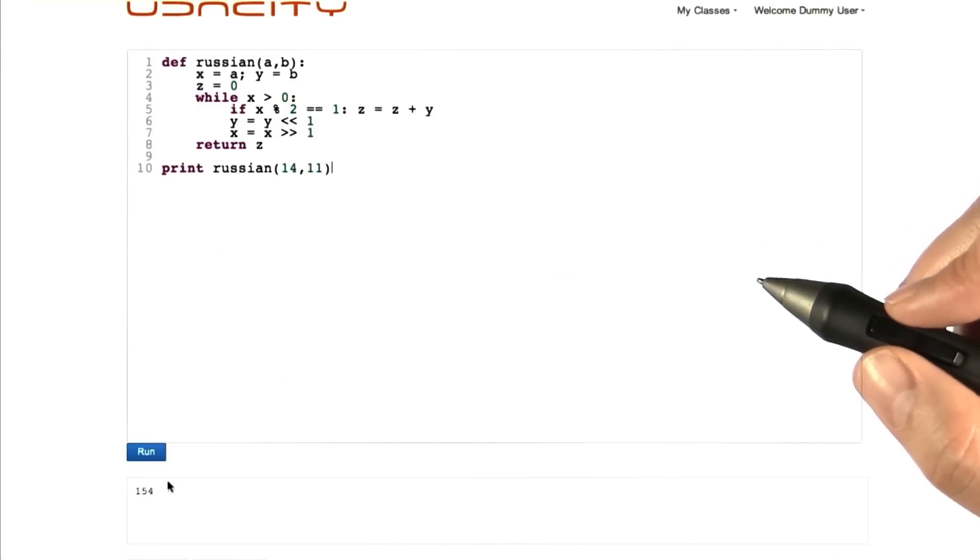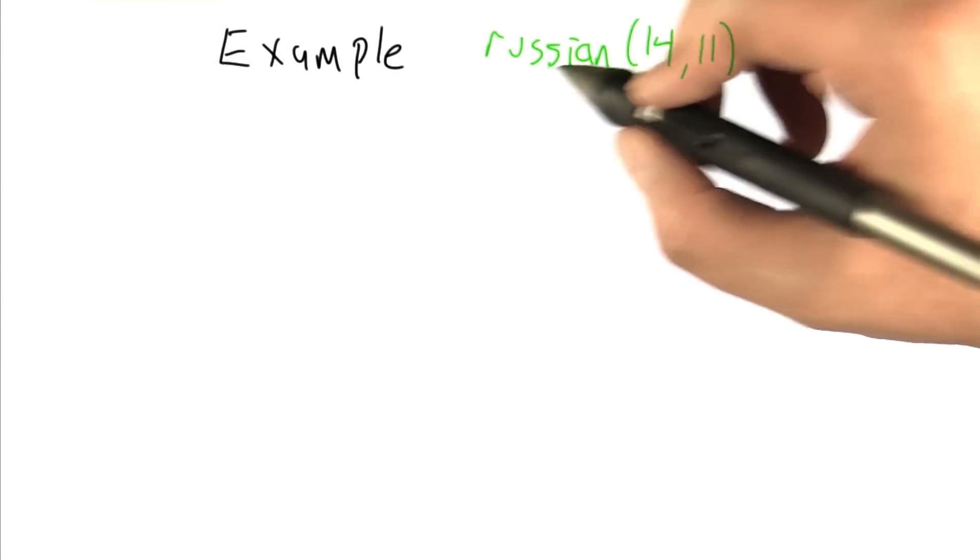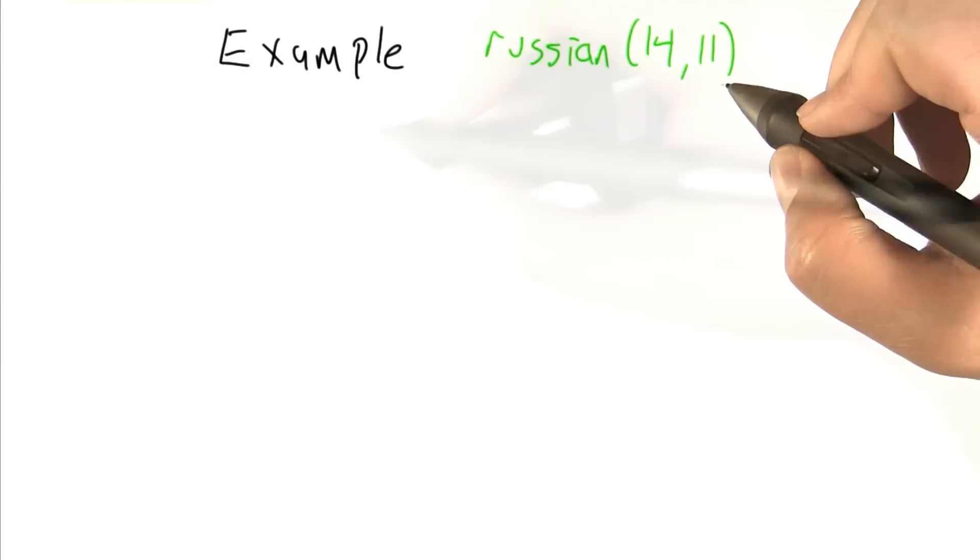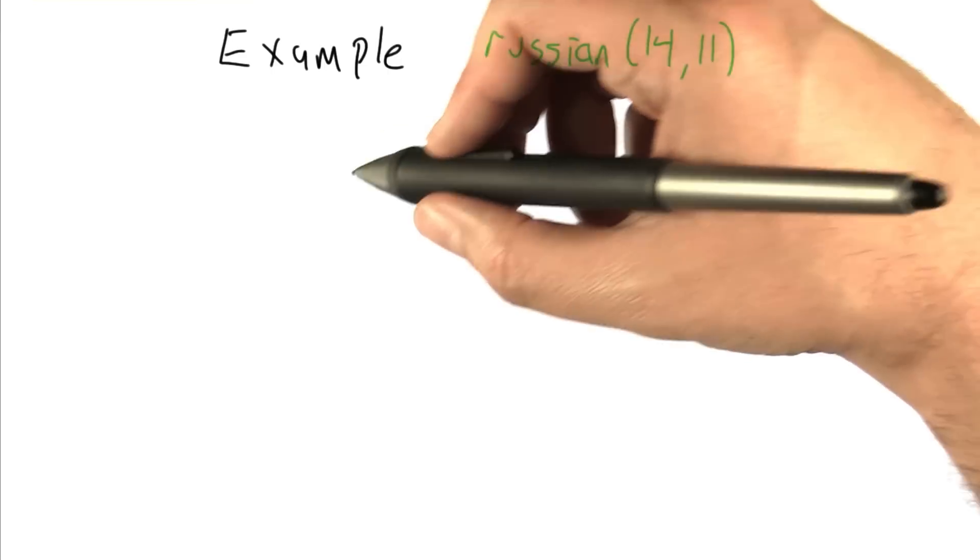so that is in fact 14 times 11. But we're going to need to step through and try to understand why it works out the way that it does. So if we give Russian the input 14, 11, it's going to assign these to x and y and start off z at 0. So let's take a look at that.